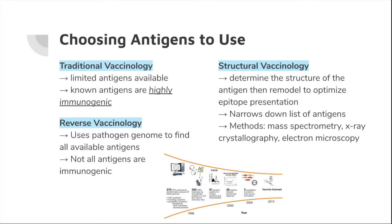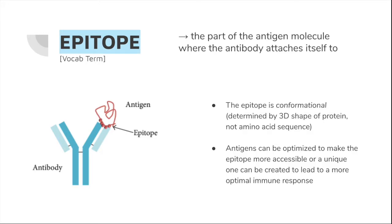Structural vaccinology is often used with reverse vaccinology to narrow down the list of antigens to test. It uses methods such as mass spectrometry, X-ray crystallography, and electron microscopy to first determine the structure of the antigen, and then remodel it to optimize its epitope presentation. The epitope is the part of the antigen molecule where the antibody attaches itself to. It allows the antibody to recognize the antigen and call for an immune response. Because epitopes conform to the 3D shape of the antigen, an antigen can be optimized to make the epitope more accessible. Epitopes are conformational — they are determined by the 3D shape of the protein and not by the amino acid sequence.